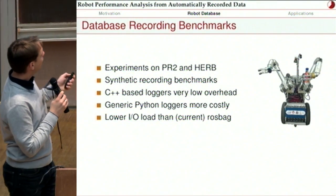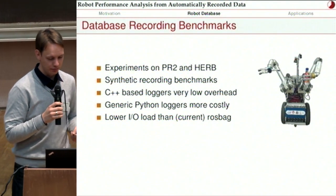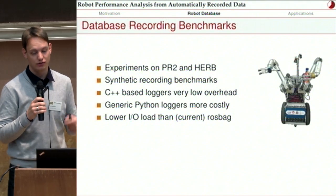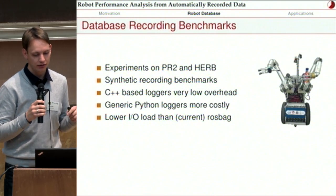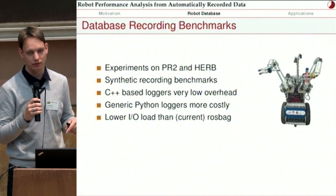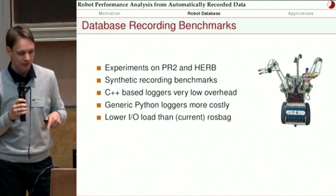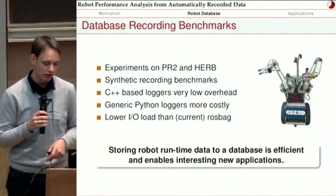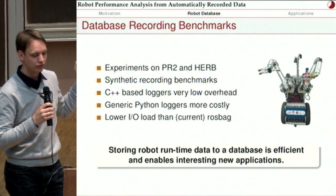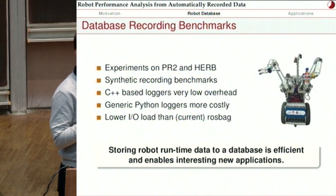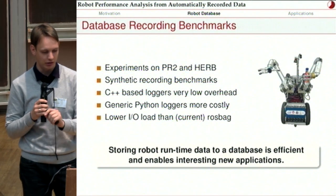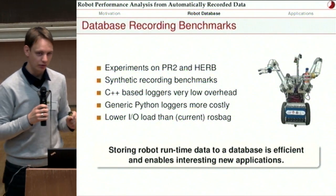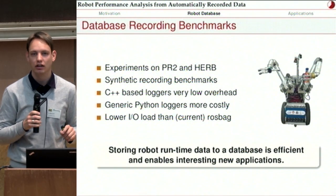At the moment — and this is kind of a bug in ROS bag — ROS bag is even slower than MongoDB logging, because ROS bag currently stores with each message it receives the full message description into the file as well. MongoDB logging doesn't do that, so it's more efficient and even faster at the moment. The takeaway message is that storing robot runtime data to a database is efficient and suitable, and it enables interesting new applications. MongoDB logging to a database is not as expensive as most people think, and you should really try it out.